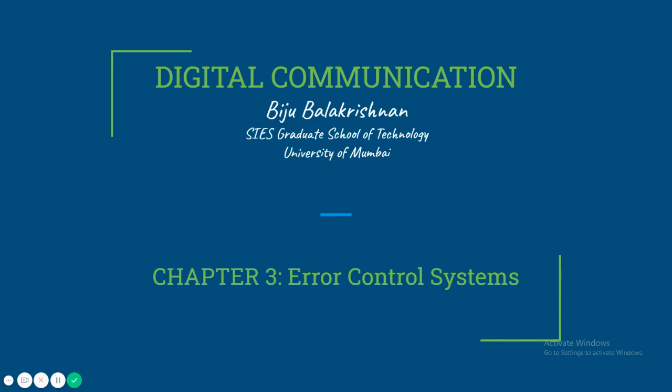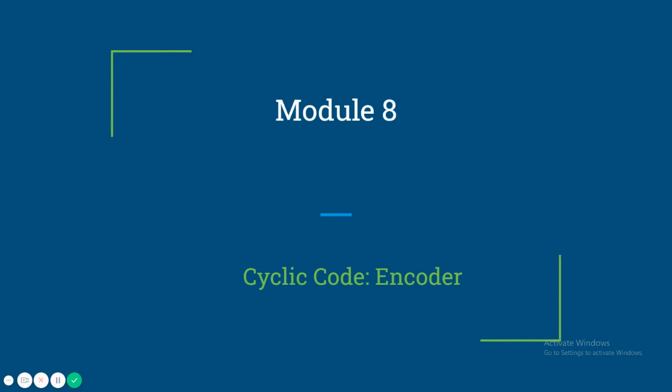Welcome to Chapter 3 of Digital Communication, Error Control Systems. Module 8 includes implementation of cyclic code encoder for a given n,k cyclic code.